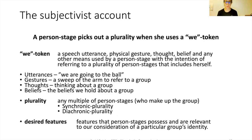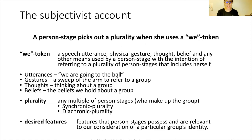Moving on to the subjectivist account — here is what I call its slogan: a person stage picks out a plurality when she uses a 'we-token.' I borrow from the philosophy of language, with more detail in my paper. A we-token can be a speech utterance, a physical gesture, a thought, a belief, or any other means used by a person stage with the intention of referring to a plurality of person stages that includes herself.